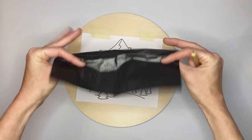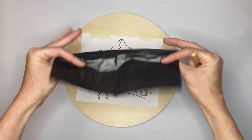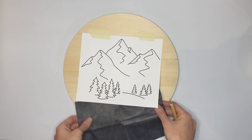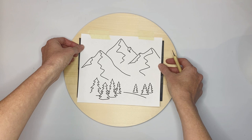You want to take the carbon paper shiny black side down and dull gray side up. Put it between the wood and the pattern.